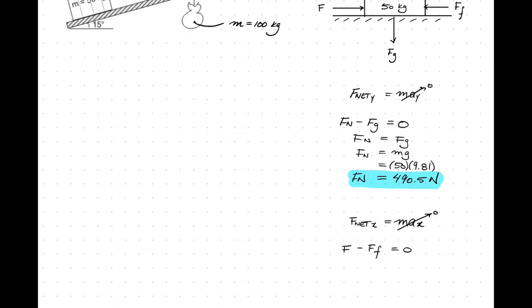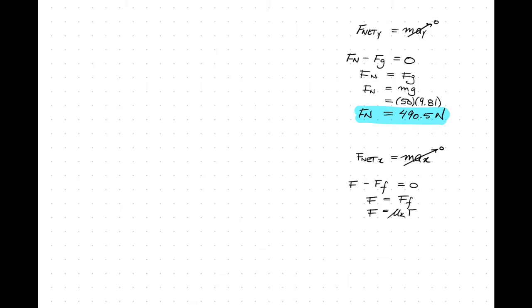Now, let's sum the forces in the x direction. We have no acceleration again as we're moving at a constant velocity. So our applied force will equal the force due to friction. The force due to friction is simply the kinetic coefficient of friction times the normal force. Solving for μk, we get approximately 0.51.